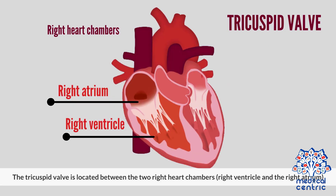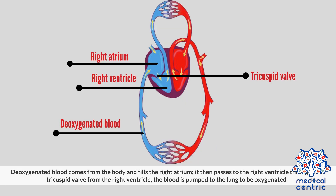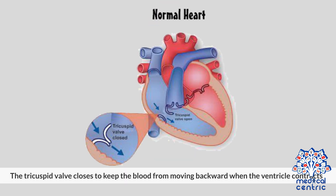The tricuspid valve is located between the two right heart chambers: the right ventricle and the right atrium. The role of the tricuspid valve is to make sure that blood flows in a forward direction, from the right atrium to the ventricle. Deoxygenated blood comes from the body and fills the right atrium, then passes to the right ventricle through the tricuspid valve. From the right ventricle, the blood is pumped to the lungs to be oxygenated. The tricuspid valve closes to keep the blood from moving backward when the ventricle contracts.